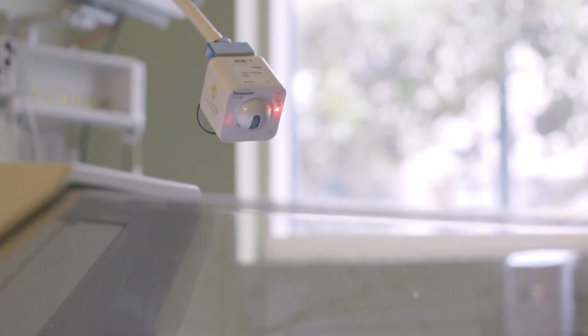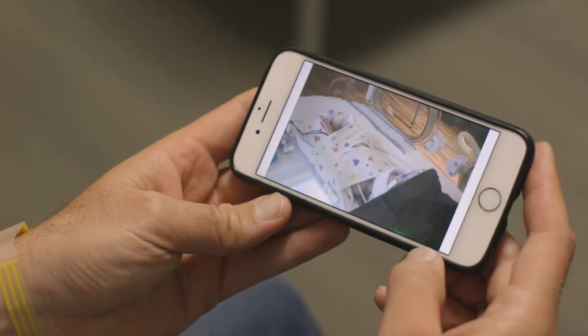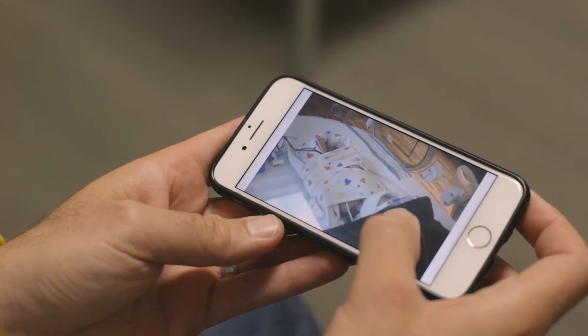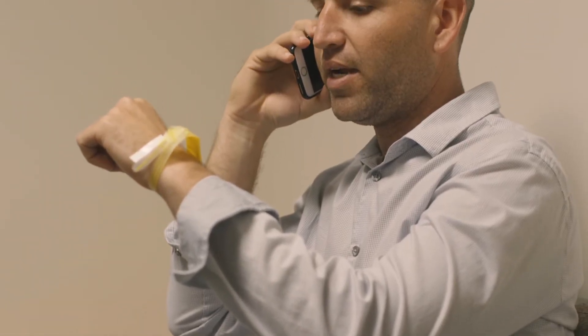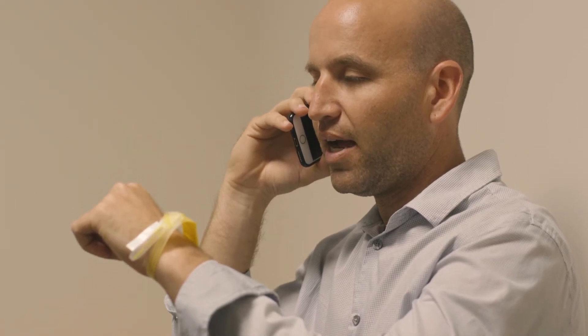you can watch your baby on a web camera from your mobile device or computer. When you call to check on your baby, you will be asked to provide the number on your ID band. This ensures information is only released to the parents.